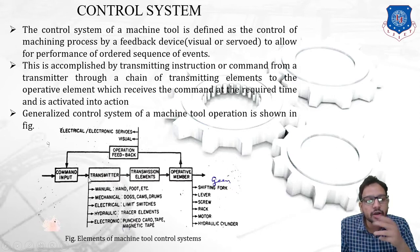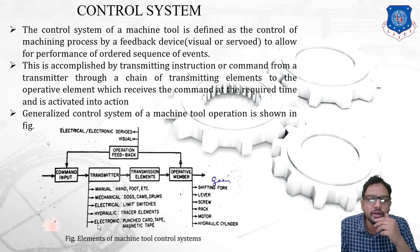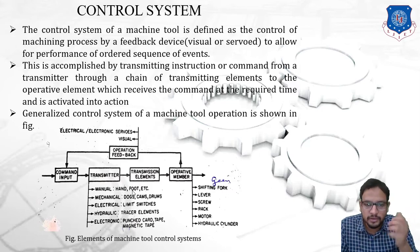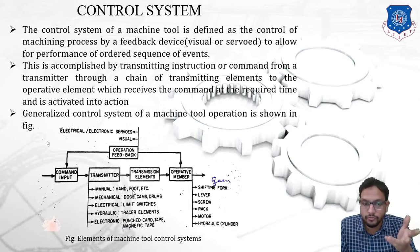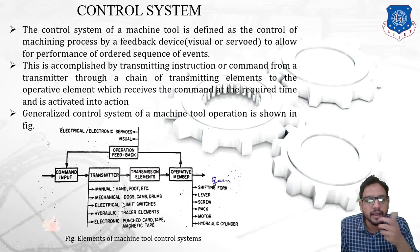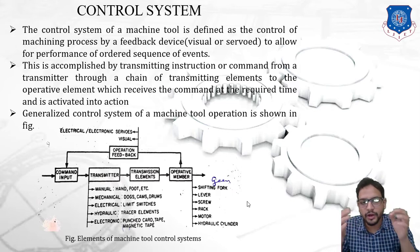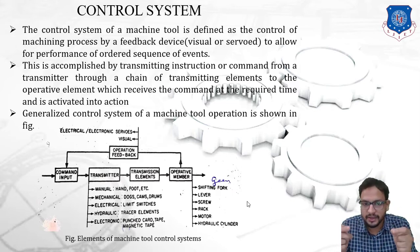A transmitter or control member could be manual, mechanical, electrical, hydraulic, or electronic. In the case of manual, it could be a hand or foot by which we operate the knob, lever, or hand wheel. Mechanical could be a cam or drum. To understand this, let us take a simple example.